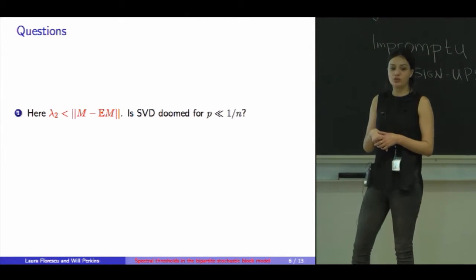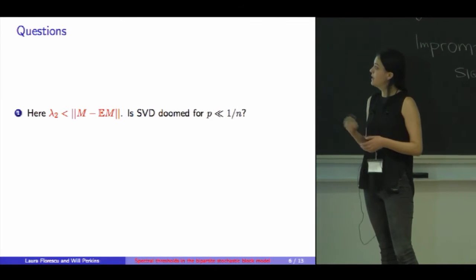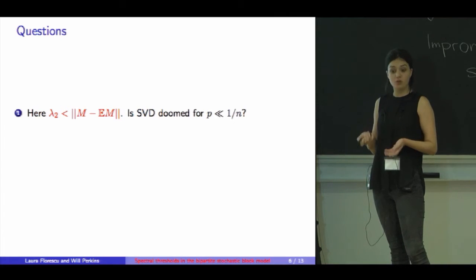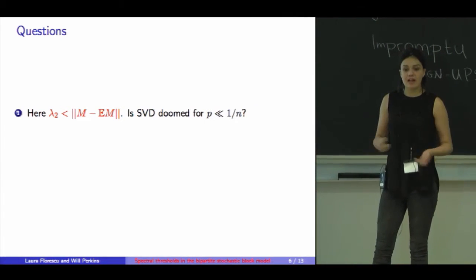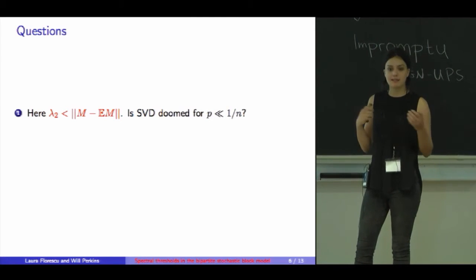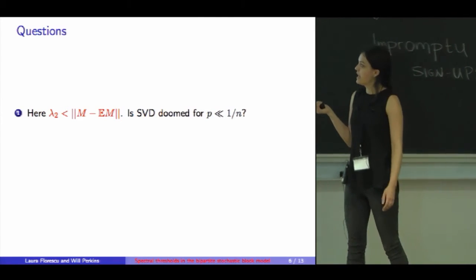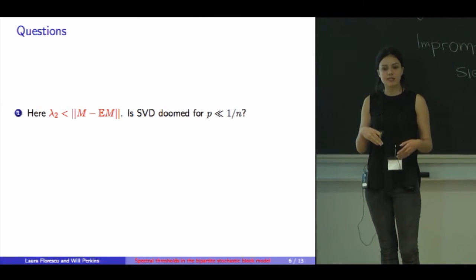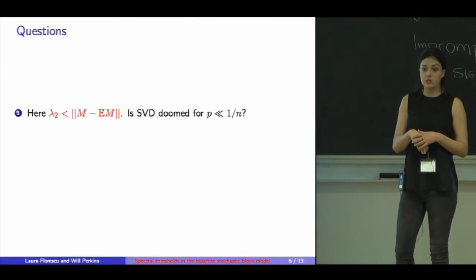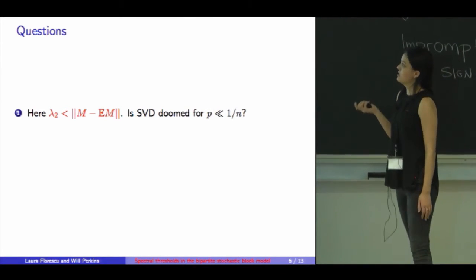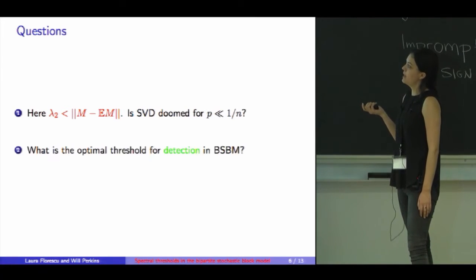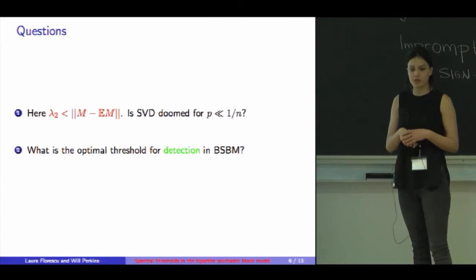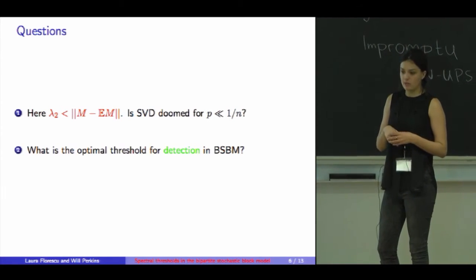The questions that we set out to investigate are: if the second largest singular value is less than the norm of the noise matrix, can we still apply the simplest thing we can do, SVD? We compute the second largest eigenvector of the adjacency matrix, then we round the entries, and based on that, we assign the labels of the vertices. And secondly, when is it even possible to do anything in this model? What's the optimal threshold for detection in the bipartite stochastic block model?